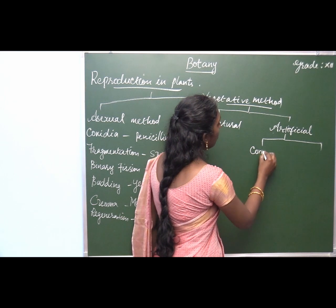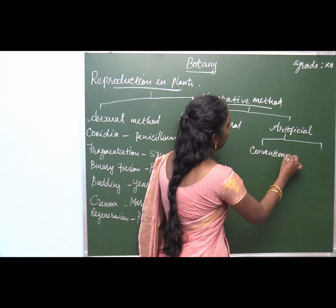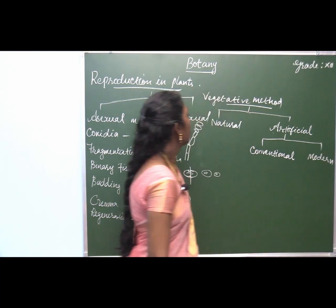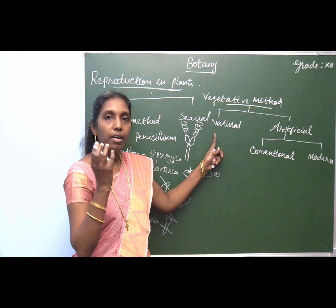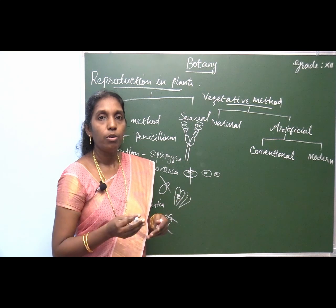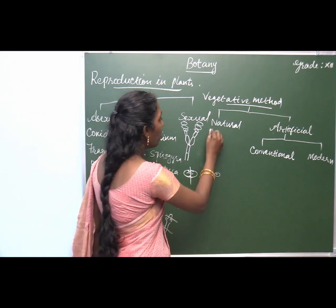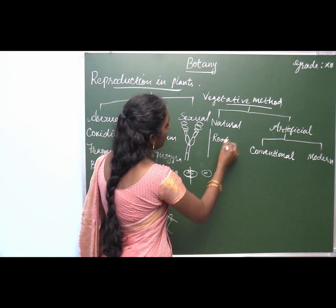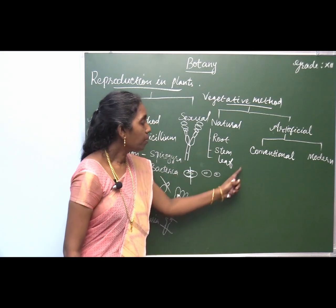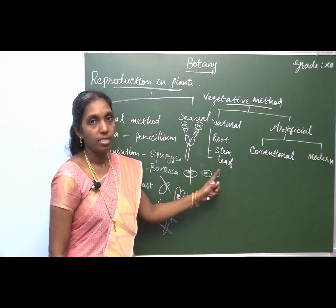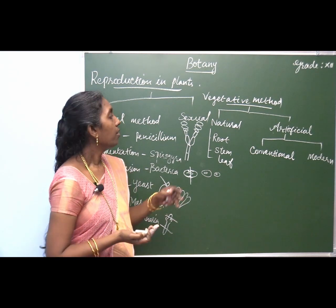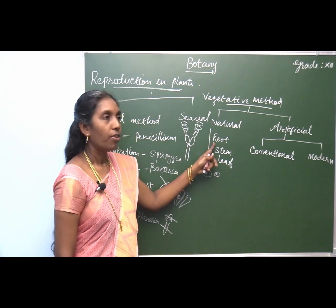The artificial method is further classified into two different types: conventional method and modern method. In the natural method, some adventitious buds or vegetative buds develop from the plant parts — root, stem, and leaf. These buds develop into a young plant; that is the natural method of reproduction.